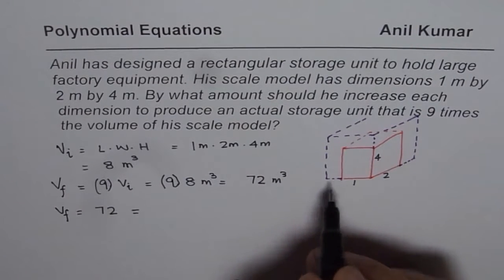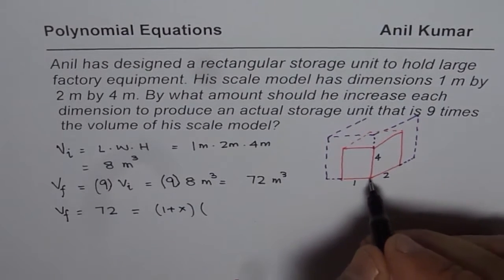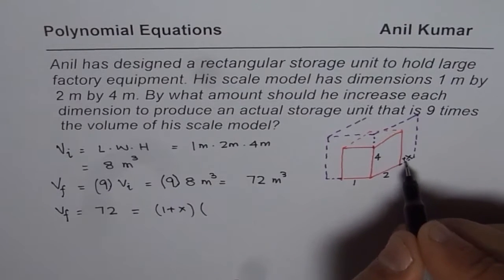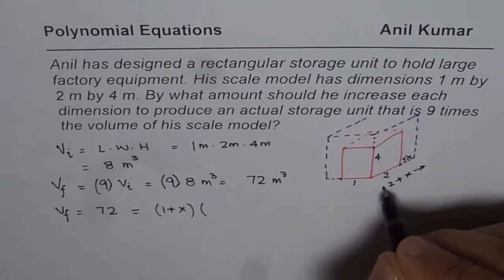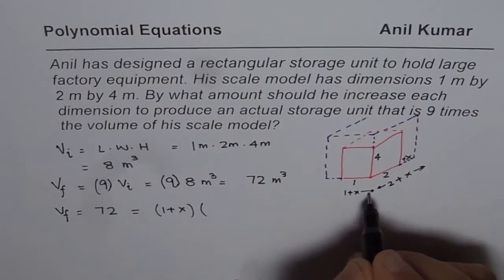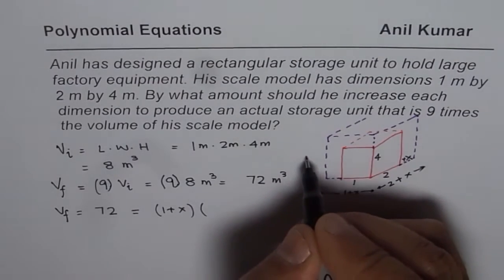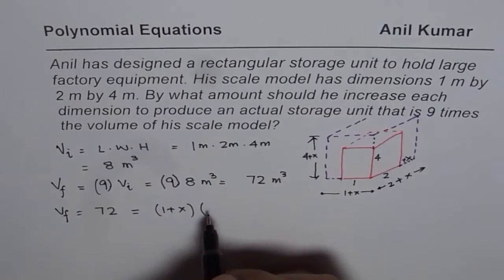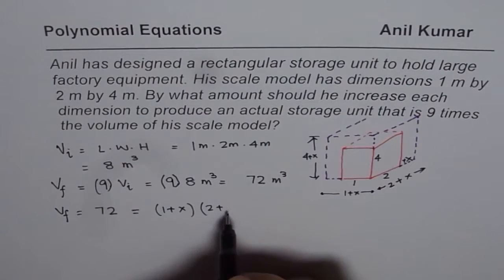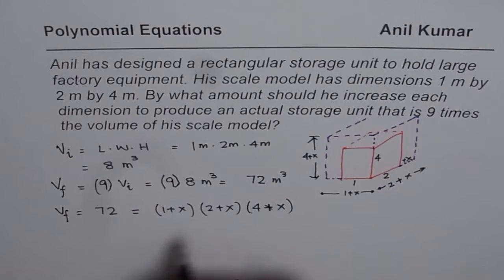So I am not writing units now. And the dimensions are 1 plus x times 2 plus x, since we increased by plus x. So this is like 2 plus x here. And this dimension is 1 plus x. The height will be 4 plus x. So that becomes the height for us. Then 1 plus x times 2 plus x times 4 plus x should be equal to 72.